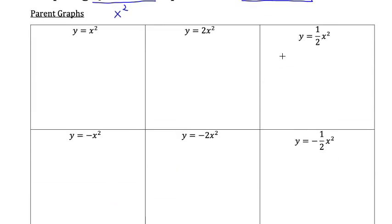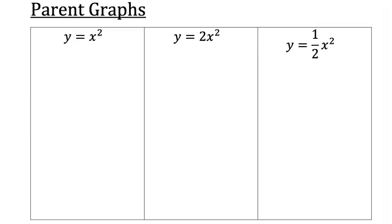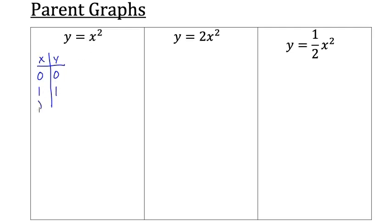But first, let's study some parent graphs, because that's going to help us. The most basic parent graph is for y equals x squared. Before we sketch that, let's make a little table of values. Starting with x = 0: 0 squared is 0. When x = 1: 1 squared is 1. When x = 2: 2 squared equals 4.